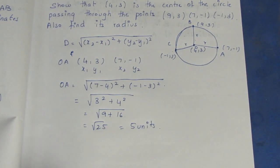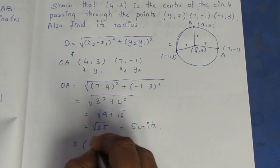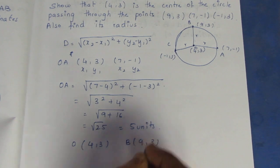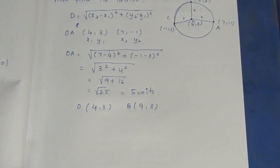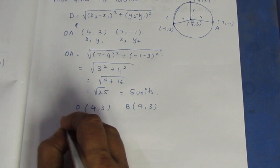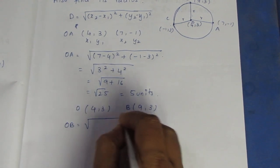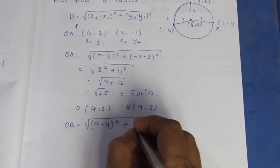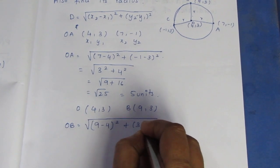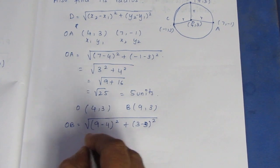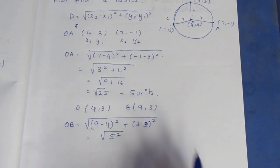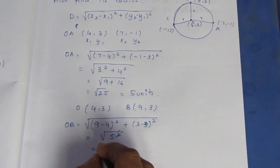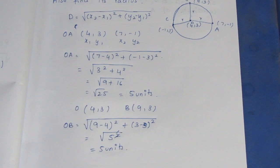Now we have OB. O is (4,3), B is (9,3). OB = root of (9 minus 4) the whole square plus (3 minus 3) the whole square. 9 minus 4 is 5 squared, 3 minus 3 is 0. So root of 25 — root cancels, giving 5 units.